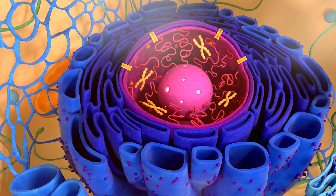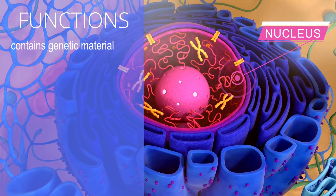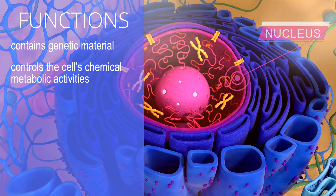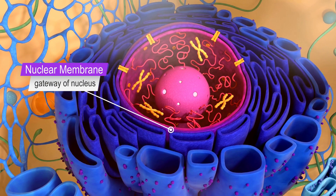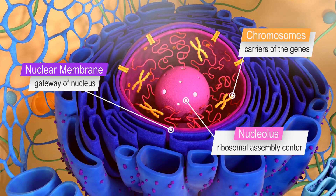The nucleus contains the organism's genetic material and controls the cell's chemical and metabolic activities. The components of the nucleus are the nuclear membrane, the gateway of the nucleus; chromosomes, the carriers of the genes; and the nucleolus, the ribosomal assembly center.